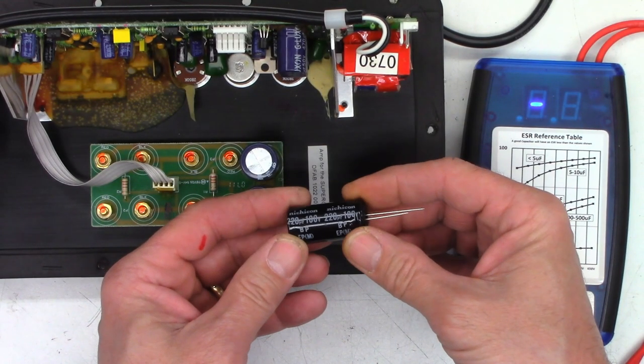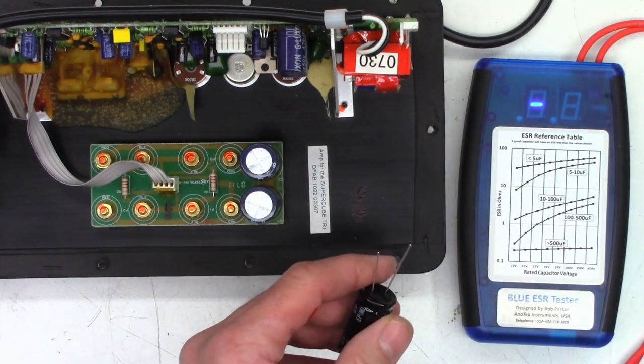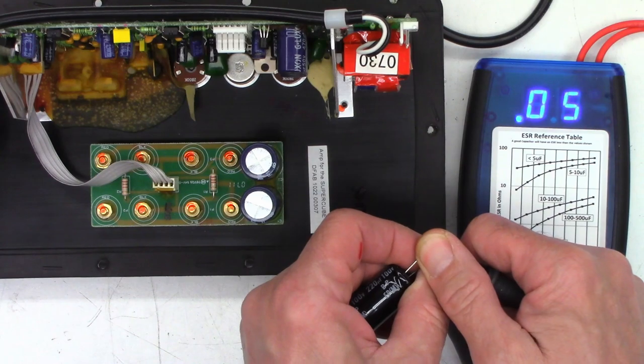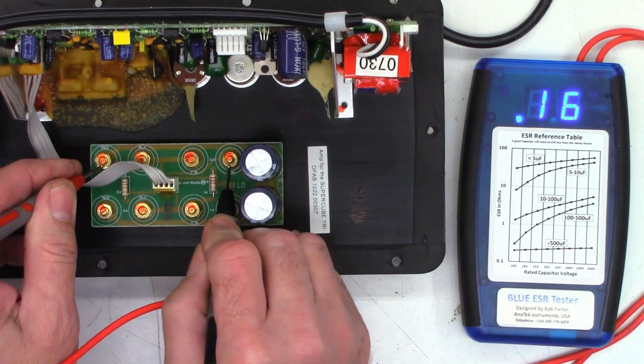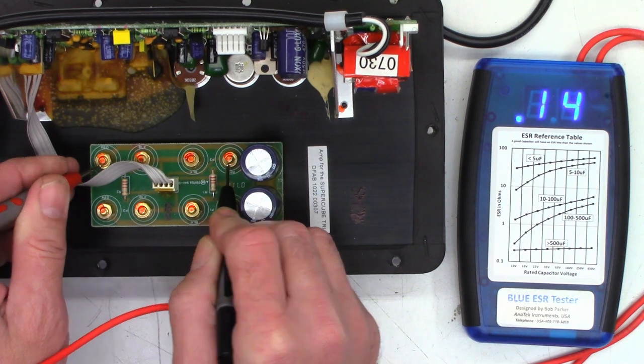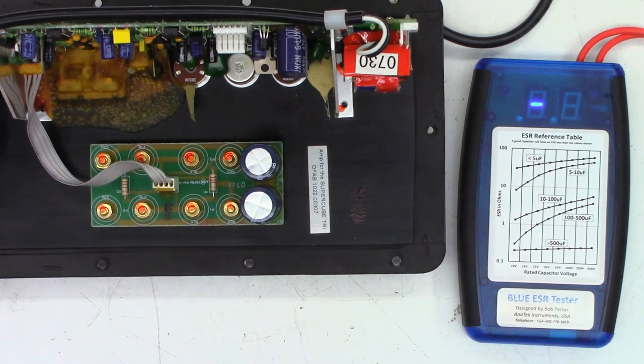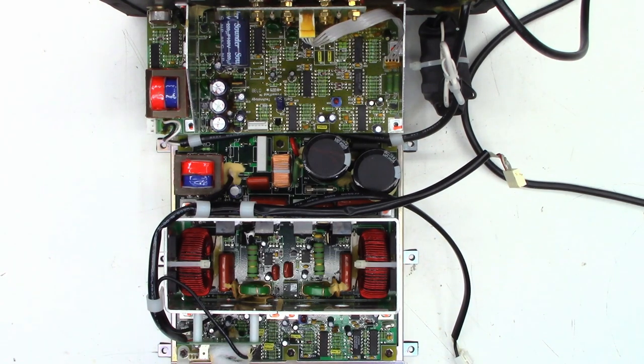These are Nichicon 220 microfarad 100 volt bipolar caps, they're speaker coupling caps, they're not polarized. A brand new one tests 0.05 ohms, so I would probably recommend going ahead and replacing this one that is 0.14 ohms. This one at 0.08 still a little bit higher than the replacement that I have.